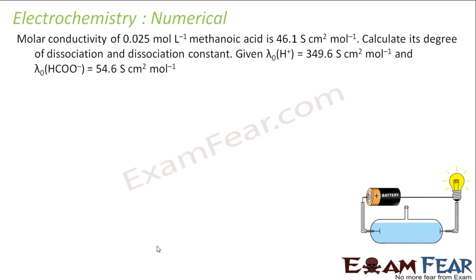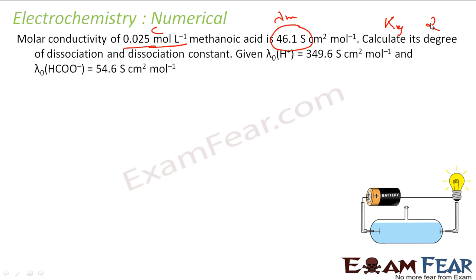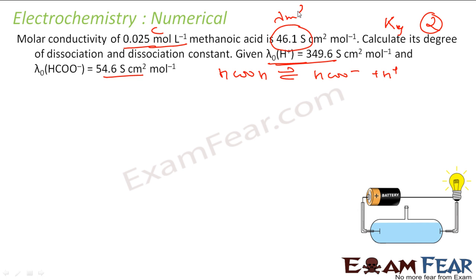The next question: the molar conductivity of 0.025 mol/L acetic acid solution (λm) is given. Calculate its degree of dissociation α and dissociation constant Ka. The equation is CH₃COOH ⇌ CH₃COO⁻ + H⁺, and λm⁰ of H⁺ and CH₃COO⁻ are given.